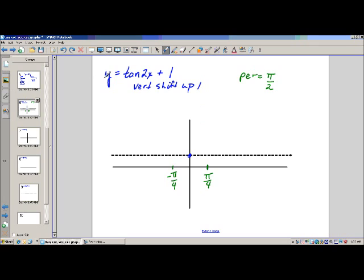Now, if I put pi over 4 in for x, 2 times pi over 4 is pi over 2, and tangent of pi over 2 is undefined. This is where our vertical asymptotes go.